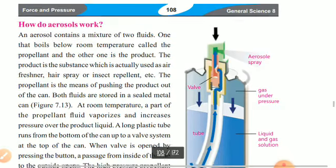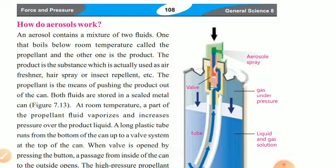How do aerosols work? Aerosols contain a mixture of two fluids: the product — which is the substance used as a spray, such as fresheners or repellents — and the propellant, which is a fluid used to push the product out. Both fluids are stored in a sealed metal can.